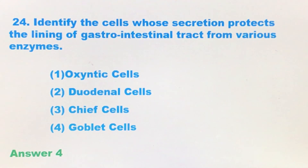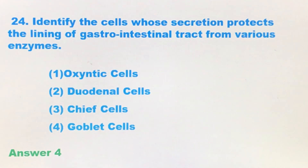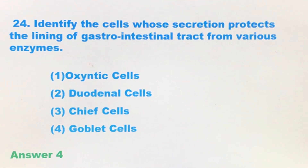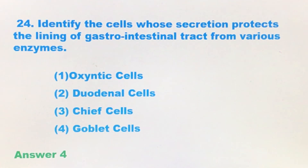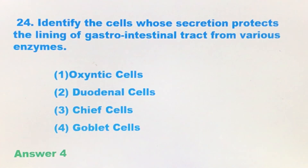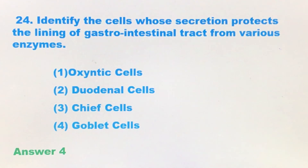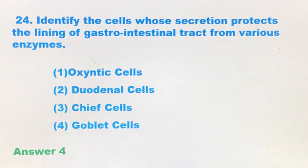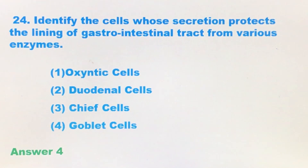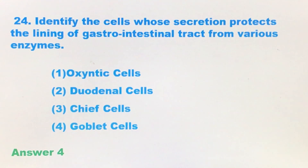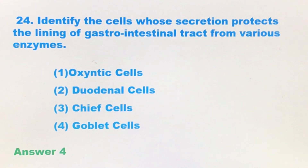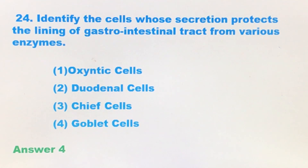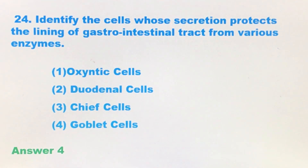The first option is oxygenetic cells. Oxygenetic cells are also called parietal cells and are located in the gastric gland of the stomach. The oxygenetic cell, or parietal cell, present in the gastric gland secretes hydrochloric acid and intrinsic factor. This obviously does not protect the GI tract.